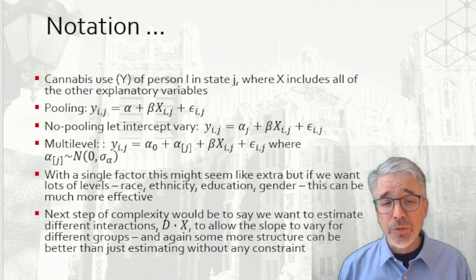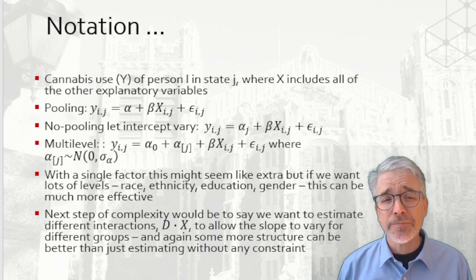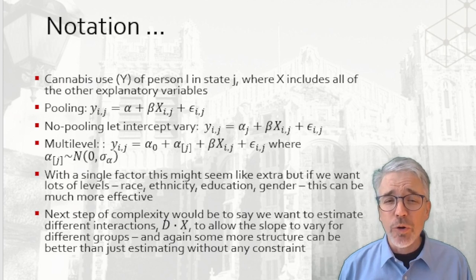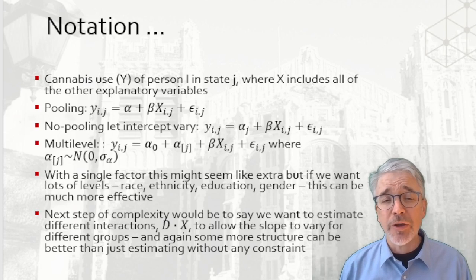The multilevel model will split those alphas. There's alpha naught plus alpha_j with square brackets to distinguish. We further model that alpha_j in square brackets has a normal distribution with some sigma coefficient of its own, sigma_alpha, to describe how much variation it has.